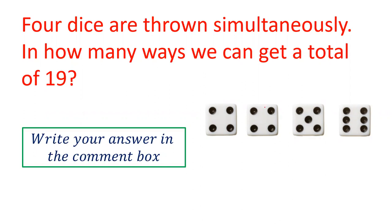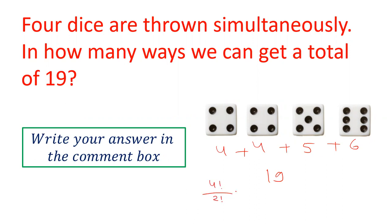The question is: there are four dice which are thrown simultaneously and you have to get a total of 19. For example, one way is 4, 4, 5, and 6 — that sums to 19. In how many ways can we get 19? For this combination alone, there are 12 permutation cases possible.